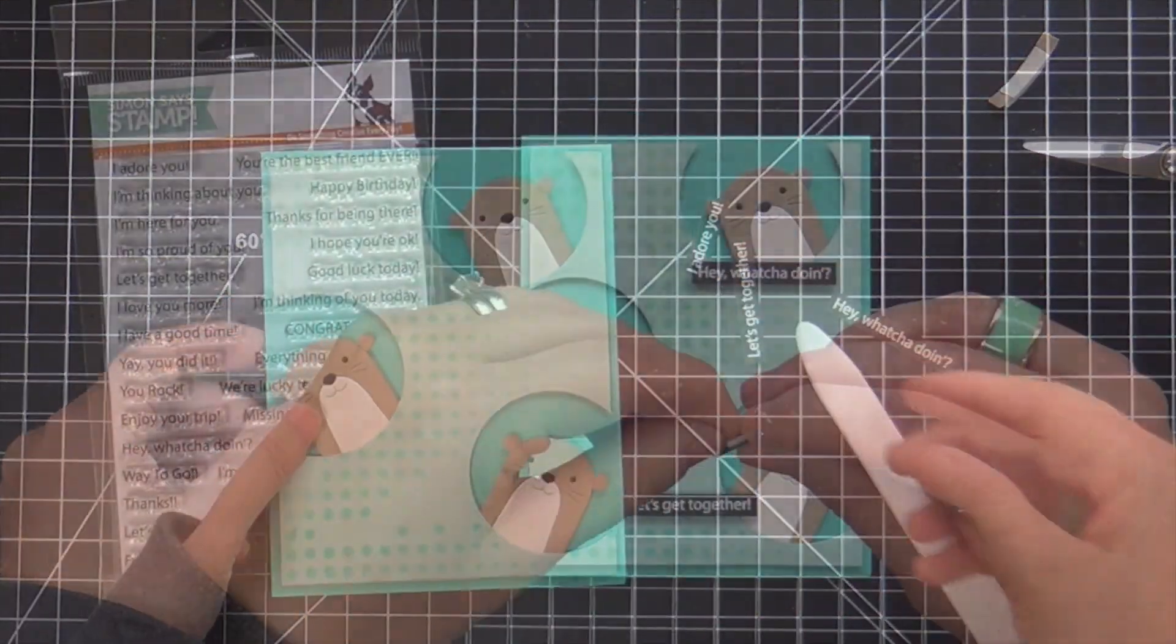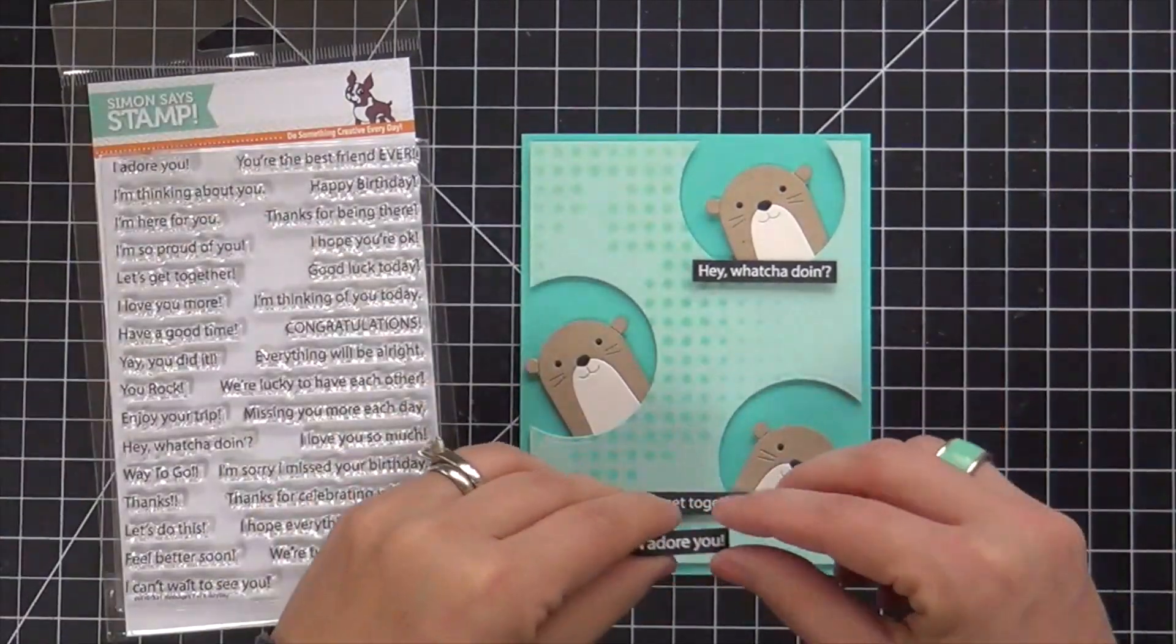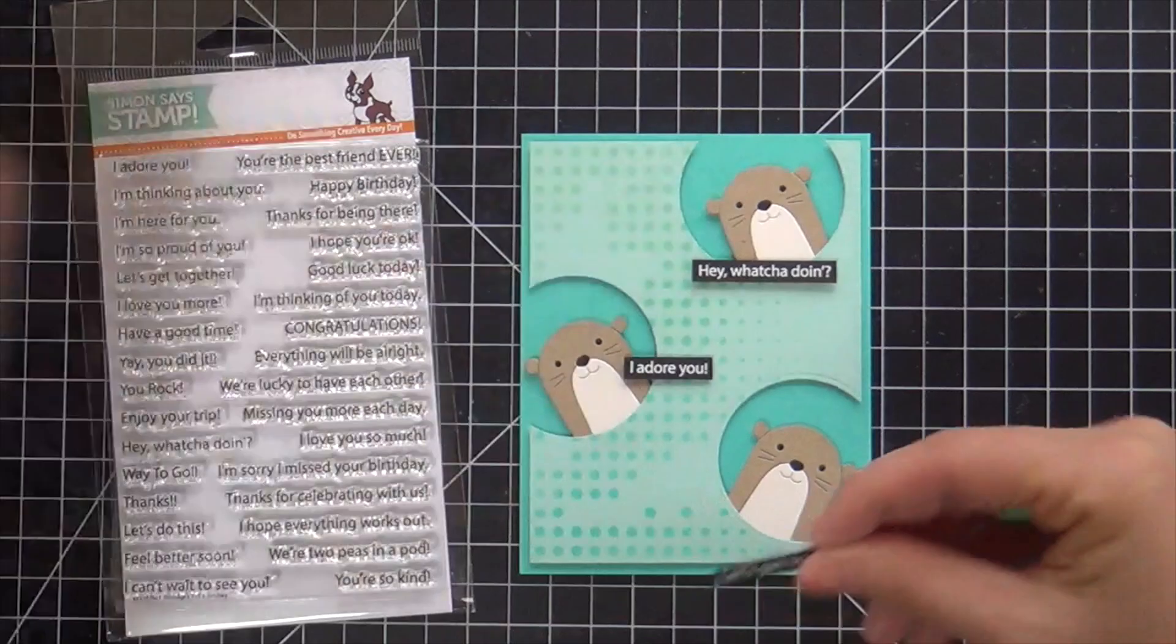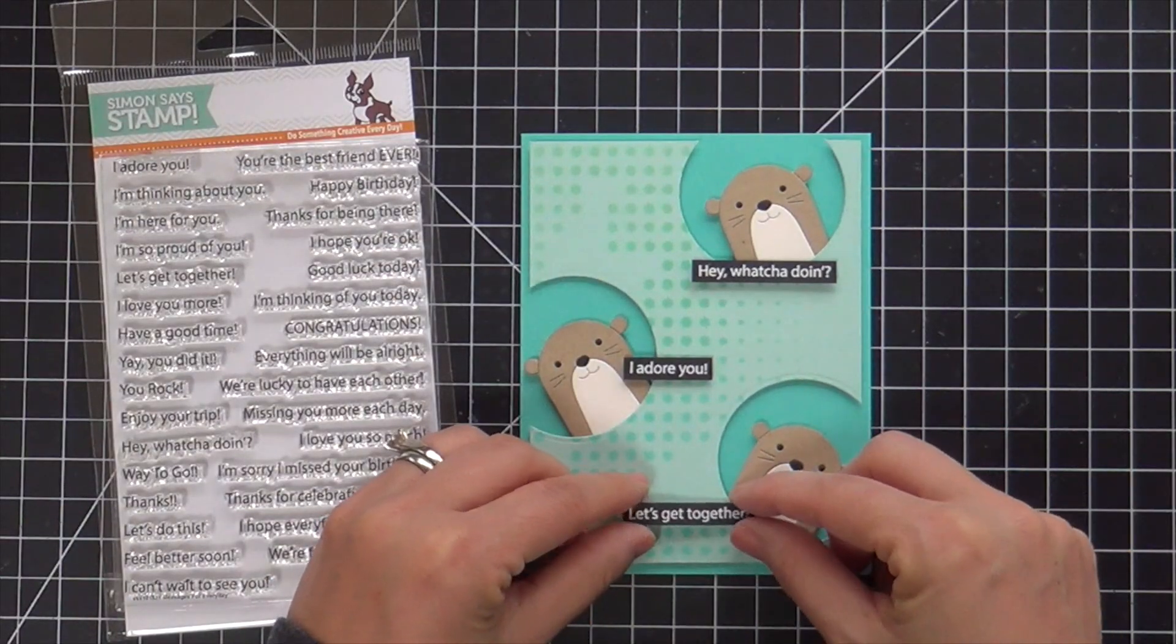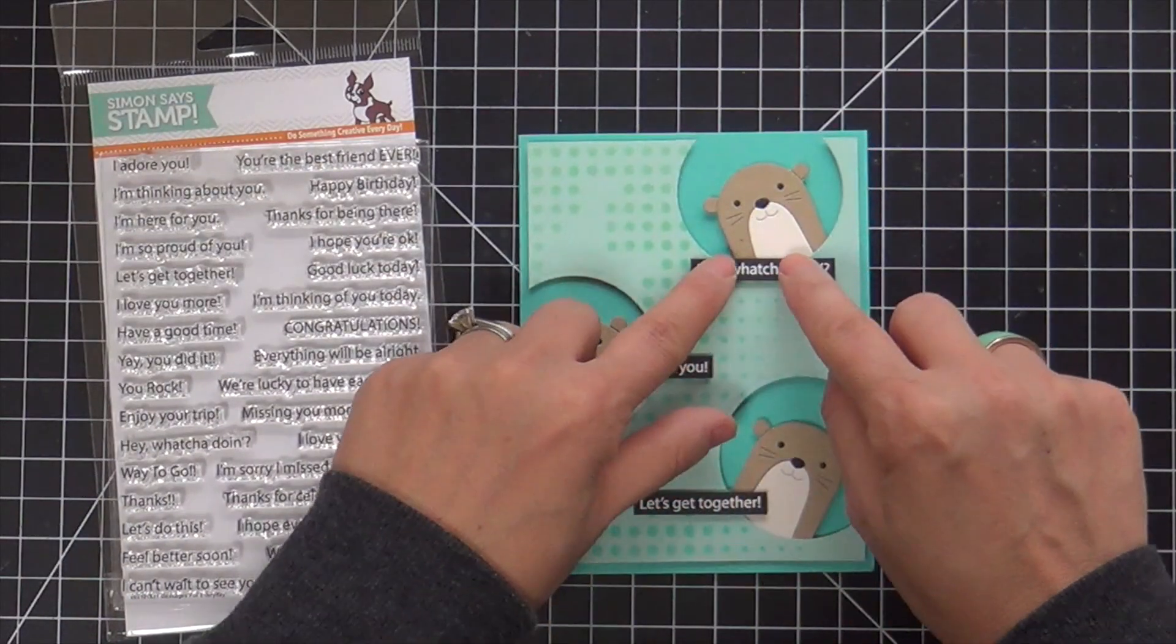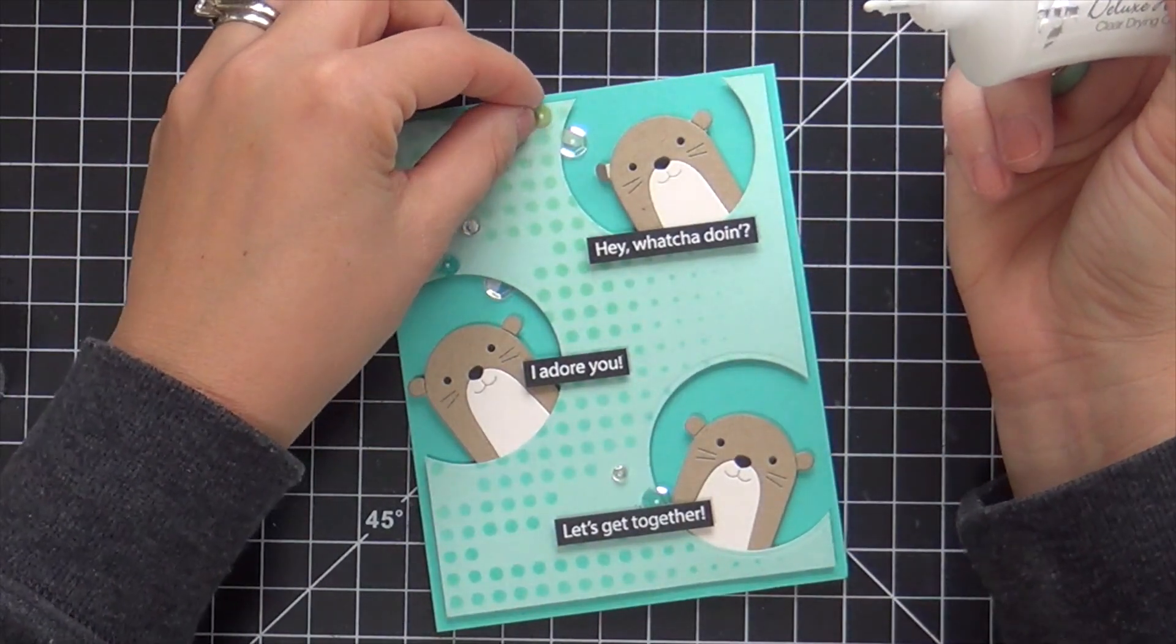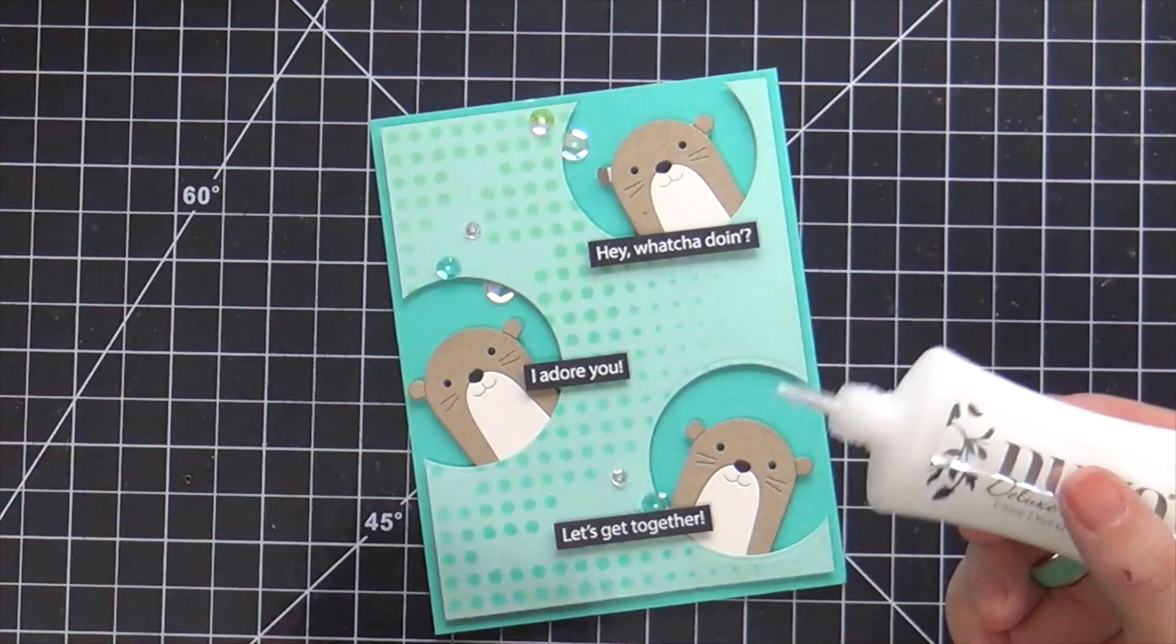Now for sentiment I went ahead and embossed off camera three of the sweet little messages from this stamp set called Messages for Every Day. Thought it'd be kind of fun to give each otter its own sentiment. And so I embossed those in white on strips of black.